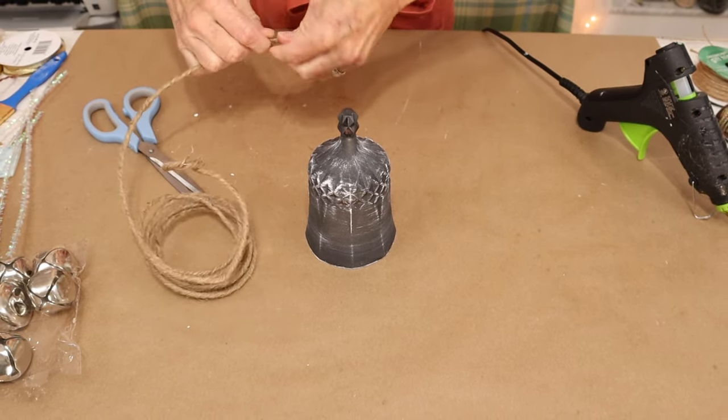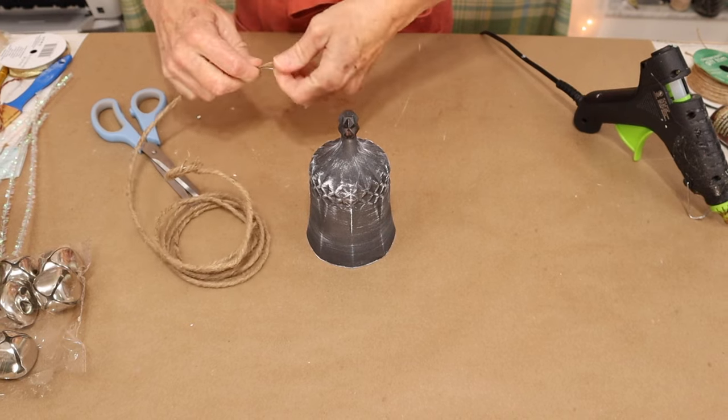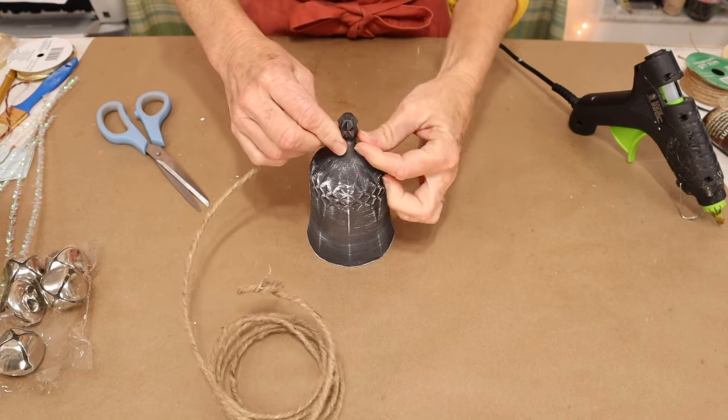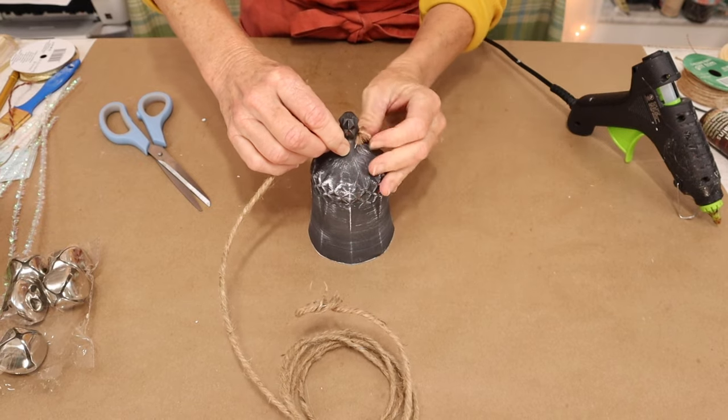Then we're going to make a little loop on top of our wine glass and then continue wrapping around to kind of make a hanger for our wine glass.